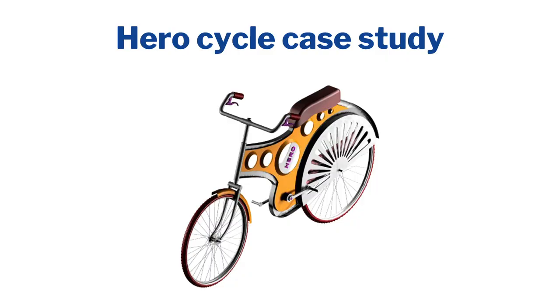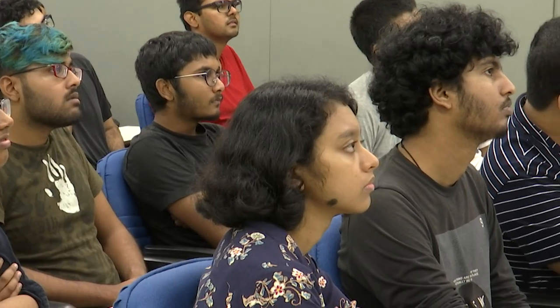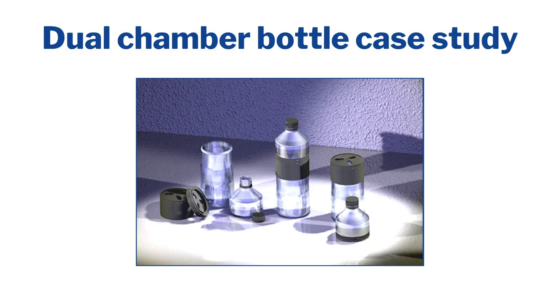We came up with these live case studies. The first was the design of a next generation bicycle for Hero Cycles, the largest bicycle manufacturing company in the country. We were very lucky that they agreed to partner with us. The next project was a dual chambered bottle for a beverage company — the company wanted a bottle with dual chambers, where masala milk's masala liquid should be mixed just before drinking. The top chamber would have the masala content and the bottom chamber the milk, designed for various Indian beverages.